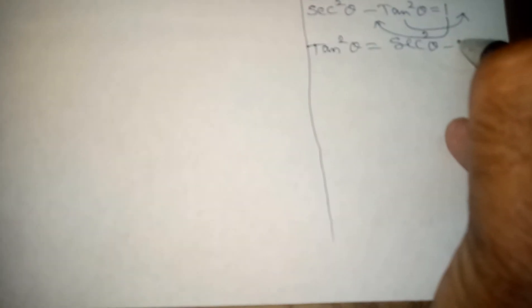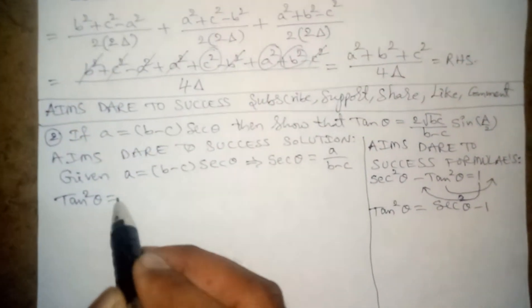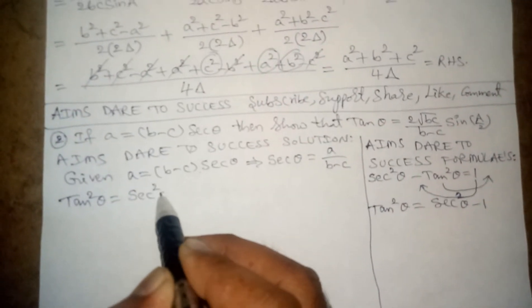I am writing the formula here: secant squared theta minus tan squared theta equals 1. Bringing tan squared theta to the right side and 1 to the left side, we get tan squared theta equals secant squared theta minus 1.